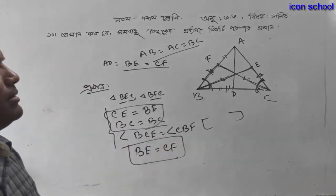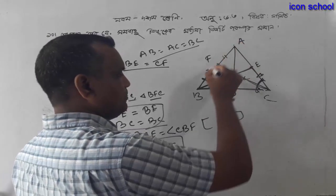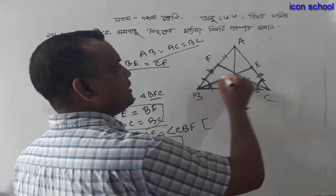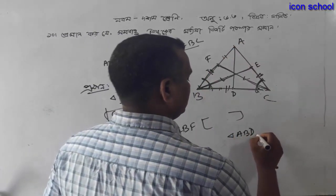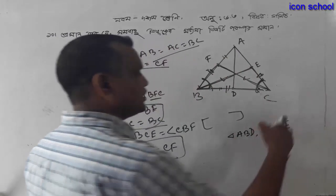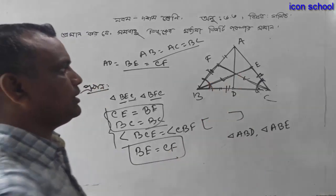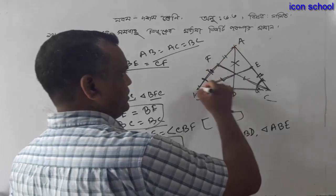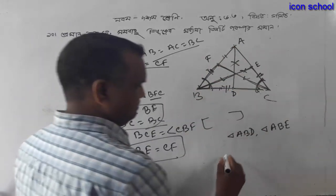Now, we have to correct this step. A, B, D and A, B, E. We have to correct this step. What do we correct? A, B, D and A, B, E. That's right for the right step. It's called AD.